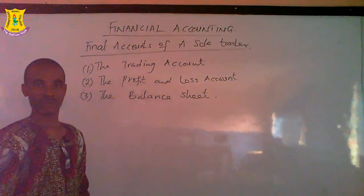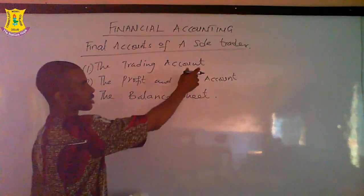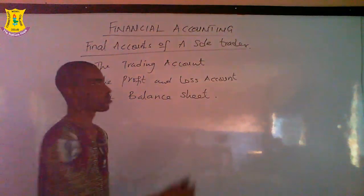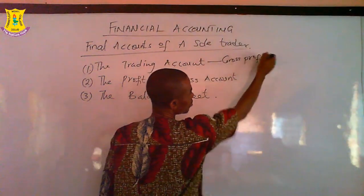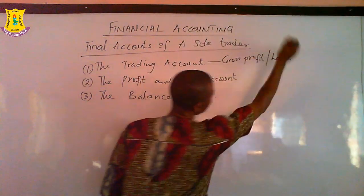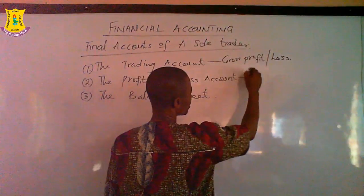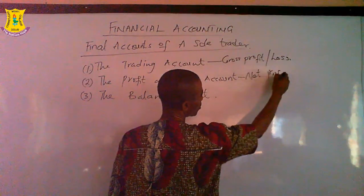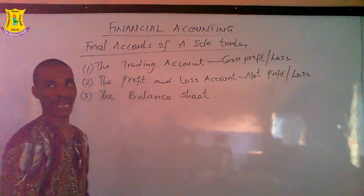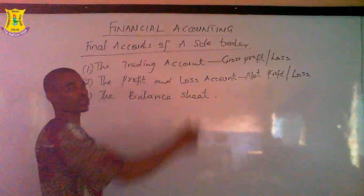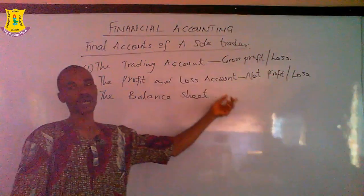When we look at a one-man business, we say that the motive of establishing a business is to make profits. For them to determine the profits at the end of the day, we need to prepare the necessary account — the final account of a sole trader. The first one is the trading account, which is prepared to determine your gross profit or loss.